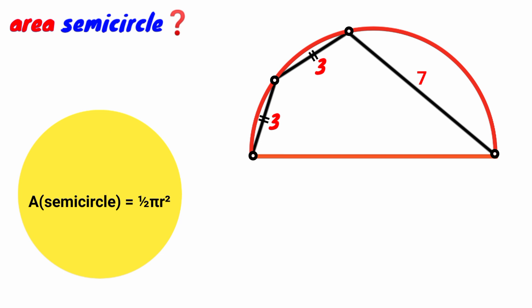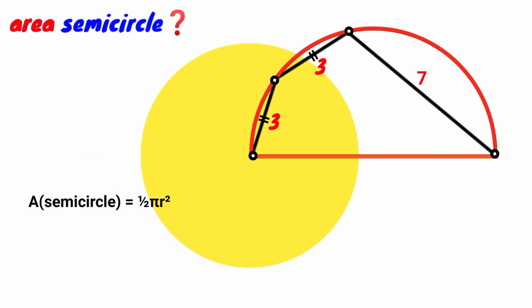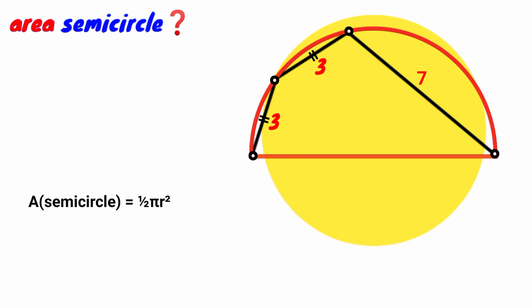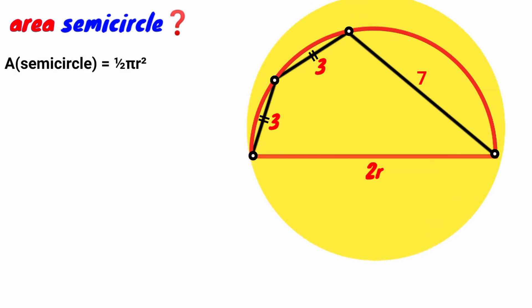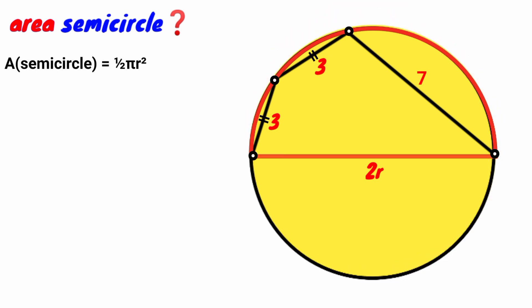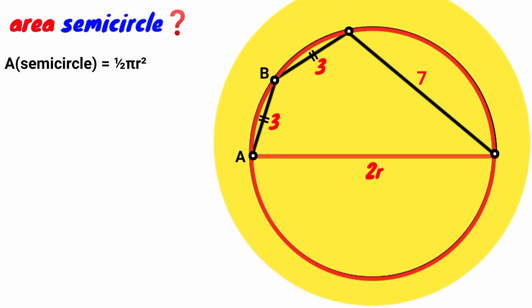What is the radius though? We don't know it directly. But this side is the diameter of the circle, and the diameter equals 2r. Since it's half a circle, we draw out the other half to get a complete circle. Let's label the points A, B, C, and D.